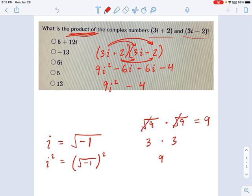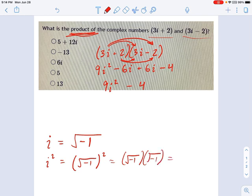Okay, that's what happens when you multiply square roots together. So, just like the square root of 9 times the square root of 9 is 9, that means the square root of negative 1 times the square root of negative 1 is negative 1. So i squared is negative 1.